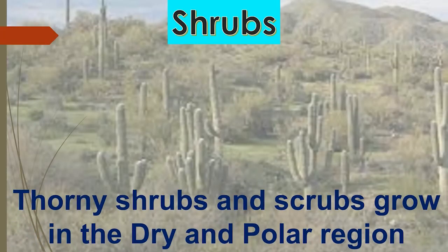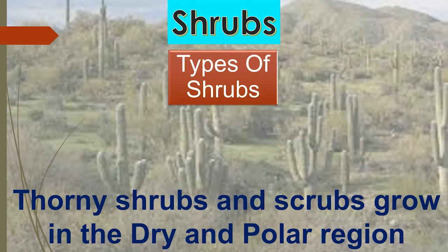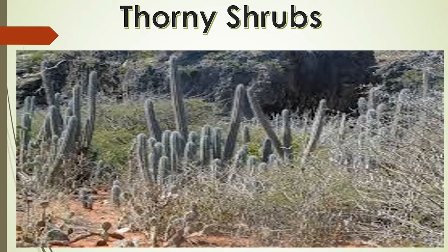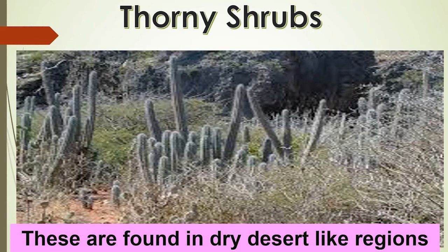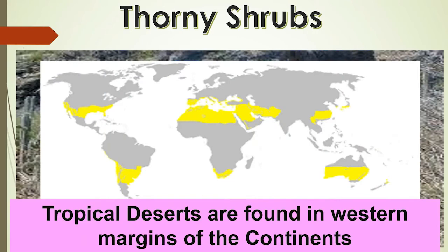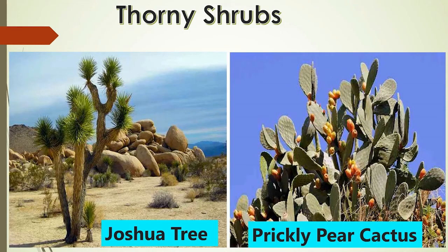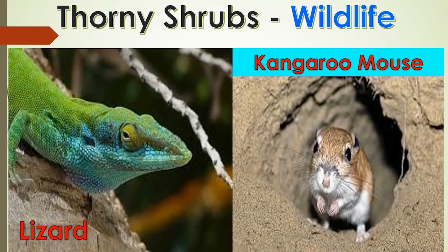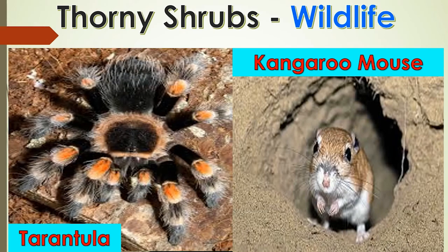Thorny shrubs and scrubs are found in the dry and polar regions. Shrubs can be divided into two types: thorny bushes and tundra vegetation. Thorny shrubs are found in dry, desert-like regions such as tropical deserts located on the western margins of the continents. The vegetation cover is scarce here because of scanty rain and scorching heat. Some common animals of these regions are camels, lizards, kangaroo mice and tarantulas.